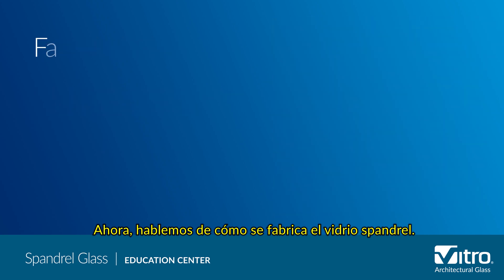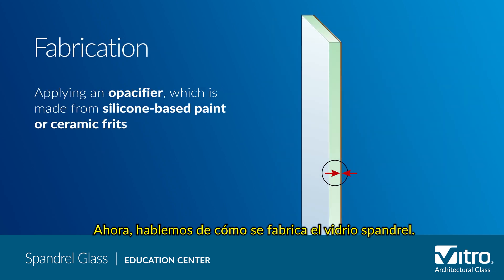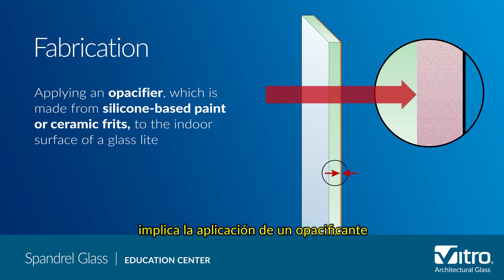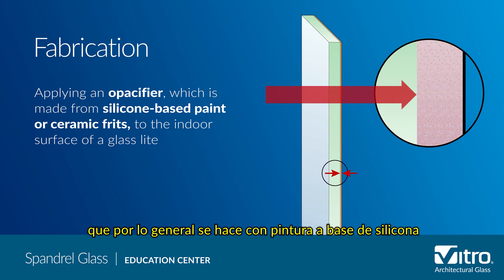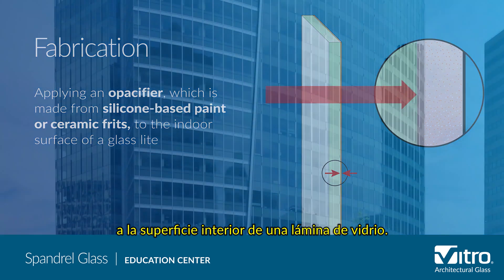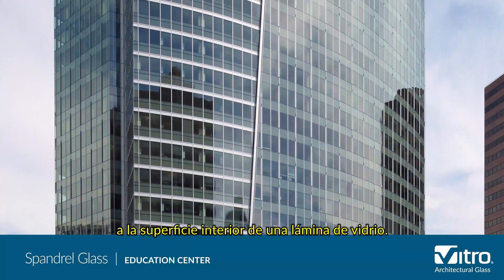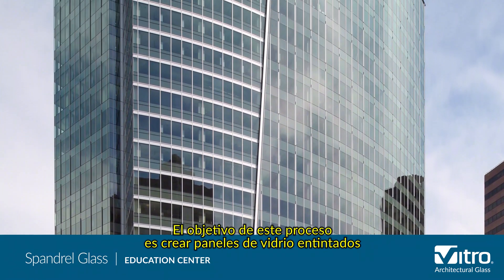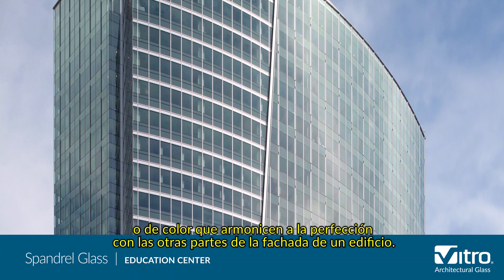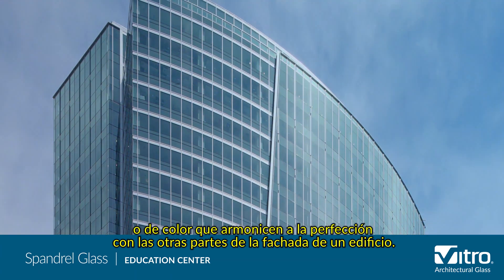Now let's talk about how spandrel glass is fabricated. The fabrication process for monolithic glass spandrels and IG spandrels involves applying an opacifier, which is typically made from silicone-based paint or ceramic frit, to the indoor surface of a glass lite. The purpose of this process is to create tinted or colored glass panels that seamlessly blend with the other parts of a building facade.